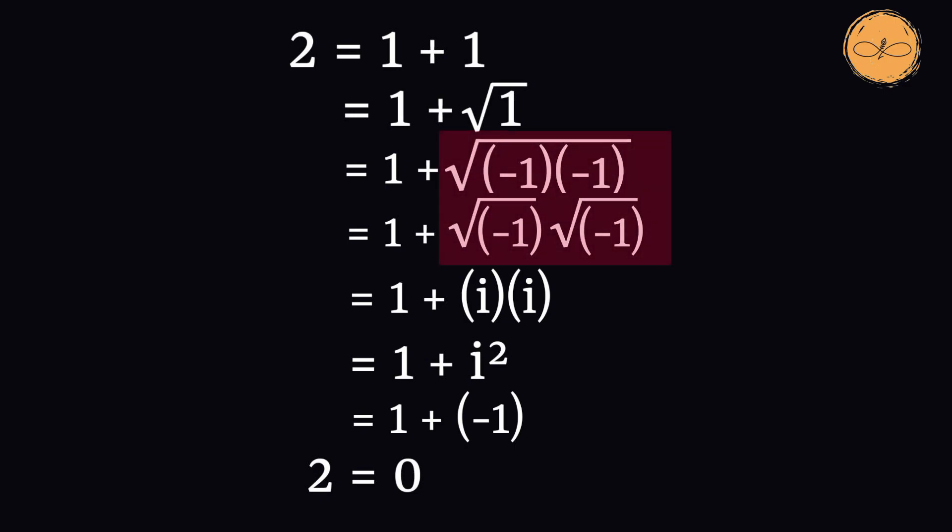The mistake is in the second and third line where you take the square root of a product of negative terms. You cannot do that because there is something called the product rule of square roots, which states that if you have the square root of a times b, then that is equal to the square root of a times the square root of b, but only when both terms are greater than or equal to 0.